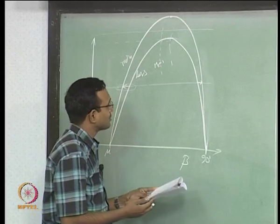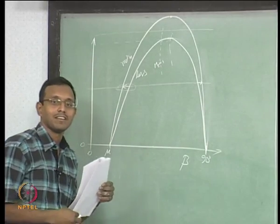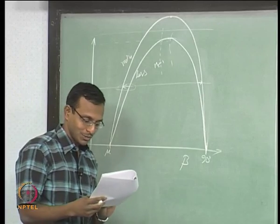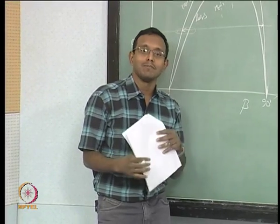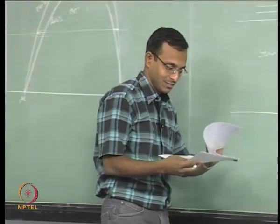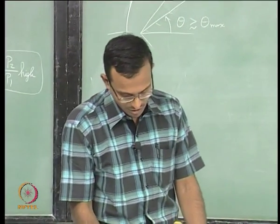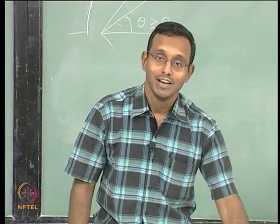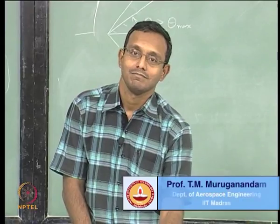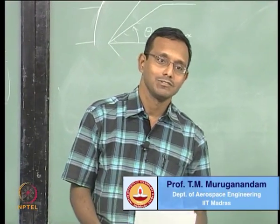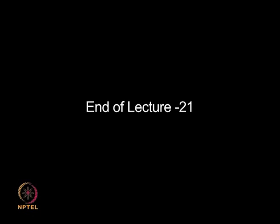Do we have a solution for the flow behind a normal bow shock yet? Not really — we cannot solve it for a bow shock and we will just leave it there. We still have a little bit of material left in oblique shocks which we will deal with next class: how to solve problems, and what happens when a shock meets something else. See you next class.